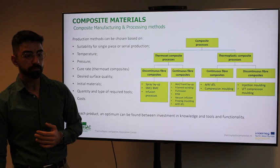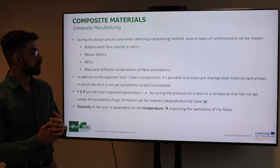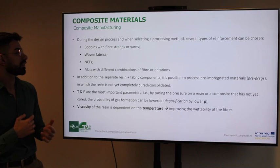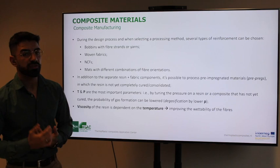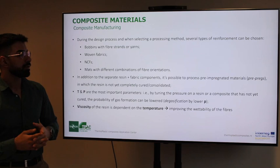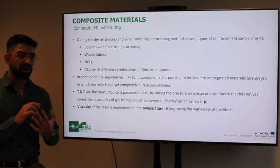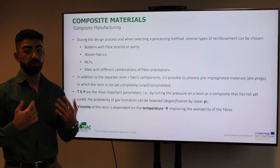During the design process when selecting a processing method, several types of reinforcement can be chosen: bobbins with fiber strands or yarns, woven fabrics, NCF (non-crimp fabrics), and mats with different fiber orientation combinations. In addition to separate resin and fabric components, it is also possible to process pre-impregnated materials called pre-pregs, in which the resin is already partially consolidated and requires a final process to fully consolidate and cure it.